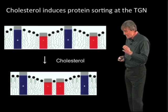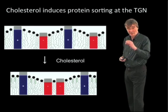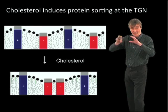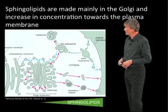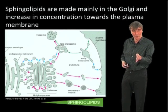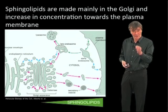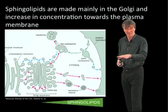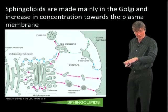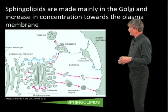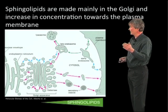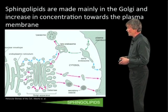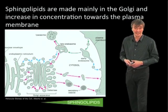So, we have a biophysical principle linked to transmembrane domain length and increasing cholesterol concentration that generates a sorting principle. But that is not enough, so let's turn to the sphingolipids. The sphingolipids are made mainly in the Golgi. The endoplasmic reticulum is very low in sphingolipids — it mainly contains cholesterol and glycerophospholipids. Sphingomyelin and the glycolipids are made in the Golgi, and their concentration increases, like cholesterol, towards the plasma membrane.